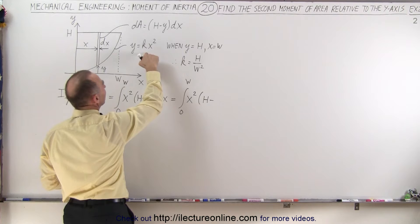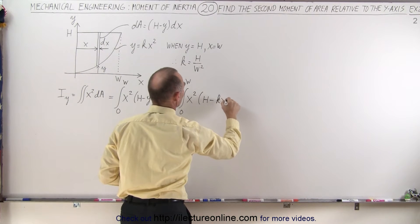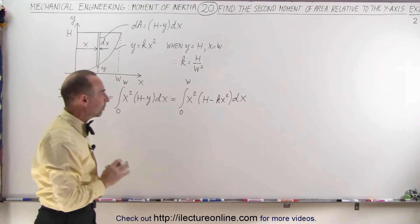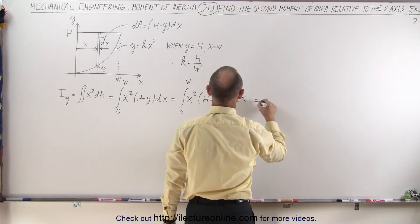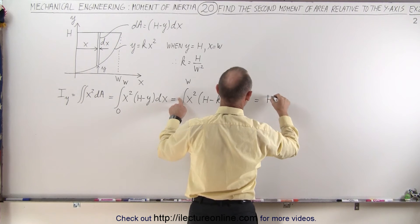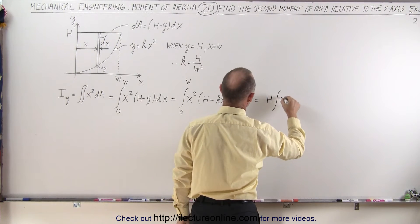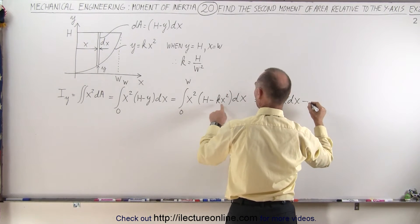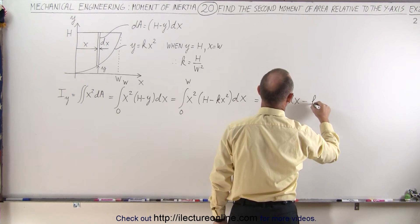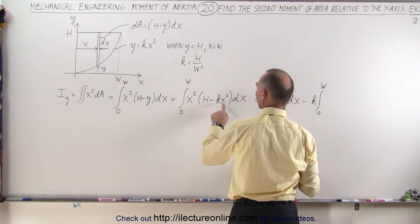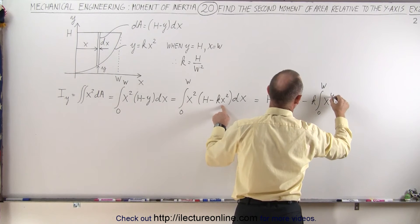Now we can turn that into two separate integrals. This is going to be equal to h times the integral of x squared dx from 0 to w, minus k times the integral from 0 to w of x to the fourth dx.